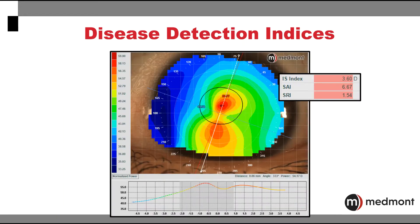The Medmont performs disease detection analysis to provide you with perspective on patients that may fall above the threshold of irregularity. This can be helpful in your conversations with potential LASIK patients that may be contraindicated, or in others that you're following their disease over time to determine if corneal crosslinking may be recommended.